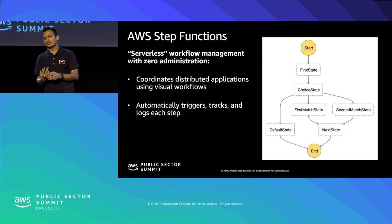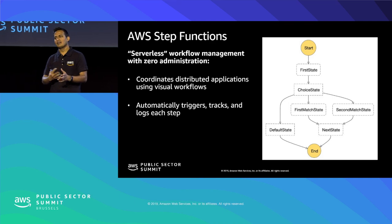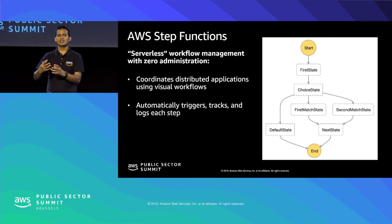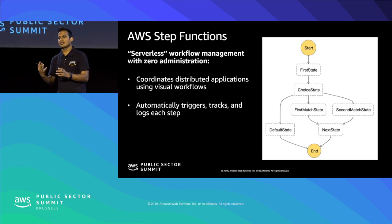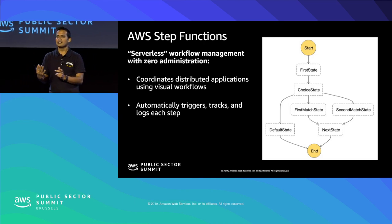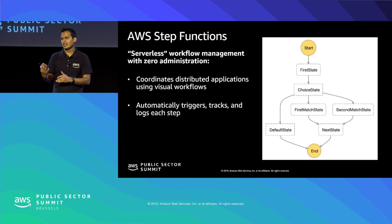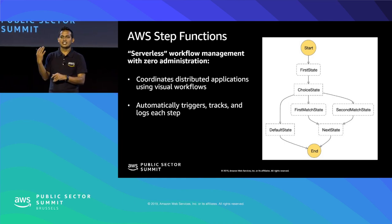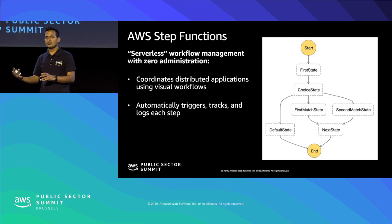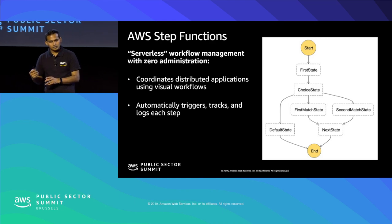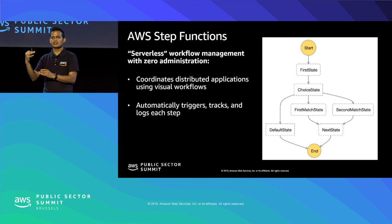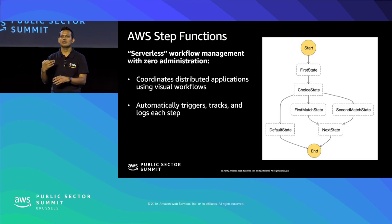Lambda is stateless, but applications need state. AWS Step Functions acts as a state machine to integrate multiple Lambda functions into a stateful application. You define the flow as JSON, and Step Functions handles sequential execution, retries, error handling, and parallel execution. You can automatically track what happens at each stage — whether it succeeded or failed — and dive deep into each state to see stack traces and debug failures.